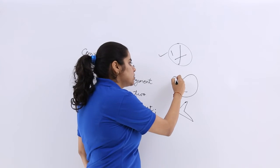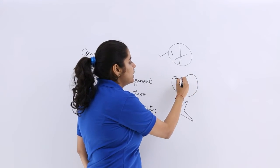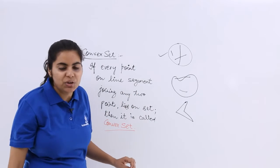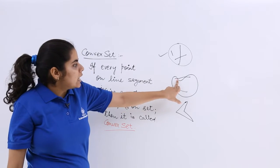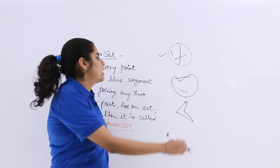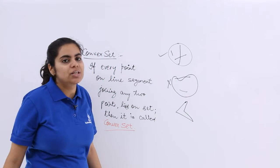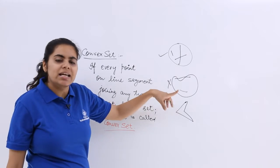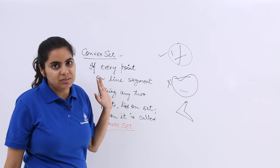But if I join these two points, the line segment comes out of the set. This has become irregular shape because I am not using a ruler or a scale. So this is not a part of the set and hence it is not a convex set. Even if you get one line segment which doesn't lie in the set, it will say that it is not a convex set.